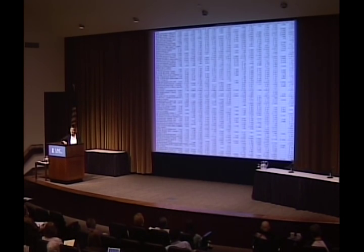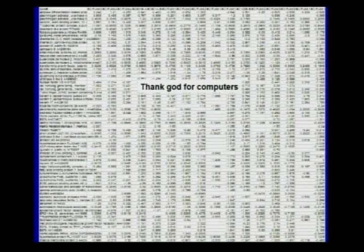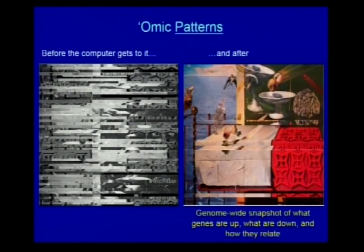This is a snapshot of what the data looks like — each row is a gene. The first chips had 5,000 genes on them, so you get 5,000 rows times however many columns. Thank God for computers. What the computer does is take all that data and identify, across thousands of genes, what's turned on, what's turned off, and what seems to be going on and off in concert — what's clustered together, what's regulating each other. That's the key thing.